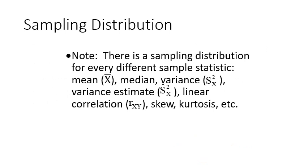When talking about sampling distributions, we have to note that there are sampling distributions for every single sample statistic — for the mean, the median, the variance, the variance estimate, the correlation, the skew, the kurtosis — all of those have sampling distributions. We are typically just going to use the mean. Every once in a while you might use the variance or the variance estimate, and last week of the semester we'll use correlation. But the point is there is a sampling distribution for each sample statistic.